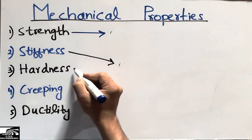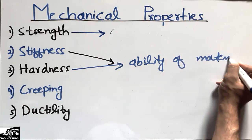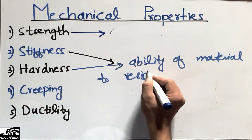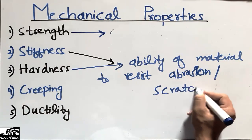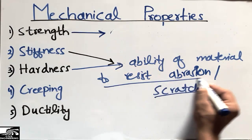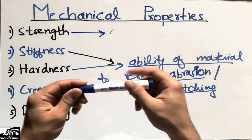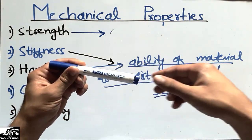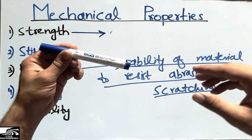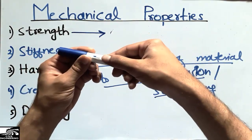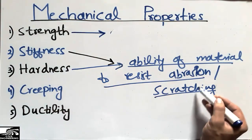The third property of material is hardness. Hardness is the ability of a material to resist scratching or abrasion. For example, consider a material — if I slide my hand over it and it gives strong resistance to scratching, we call it a hard material. If the hand slides over easily, it is a soft material. The more abrasion resistance, the harder the material.